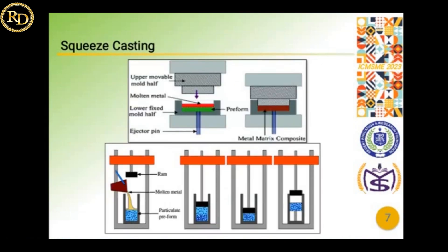Then comes squeeze casting. Here, the mixed composite is put into a die and pressure is applied from above onto the composite to form a hard structure of the required shape.